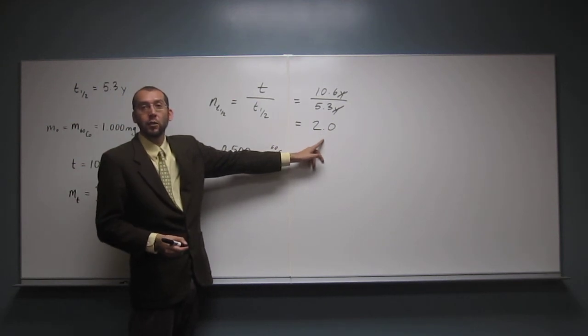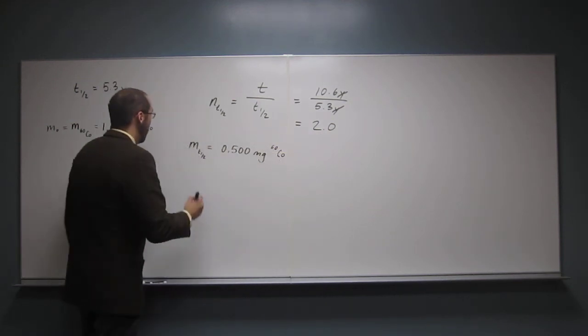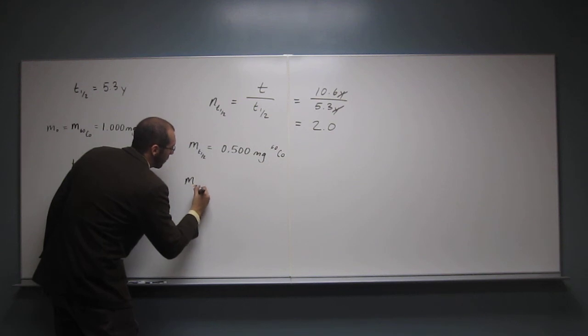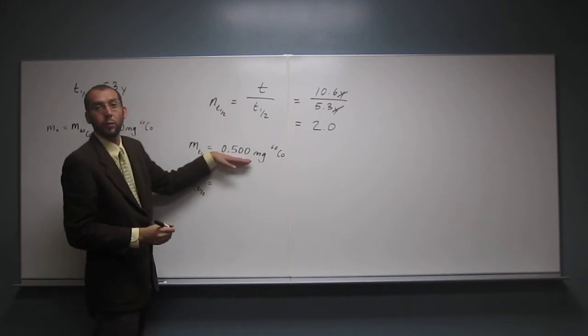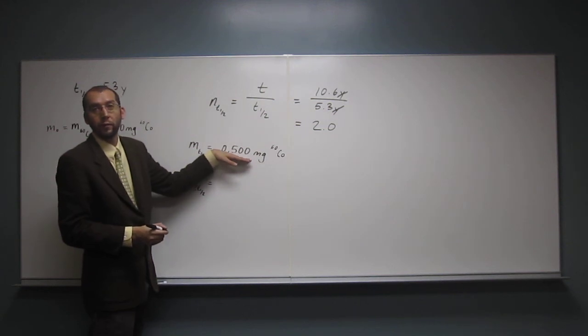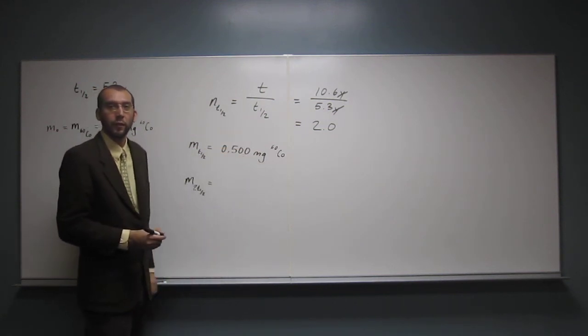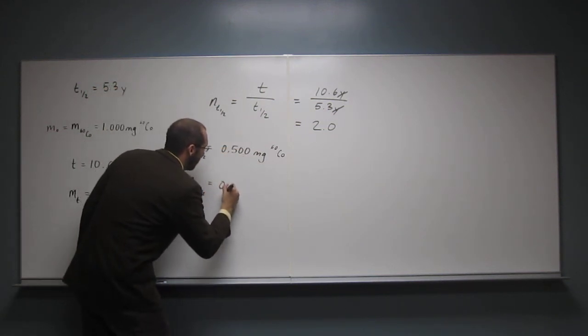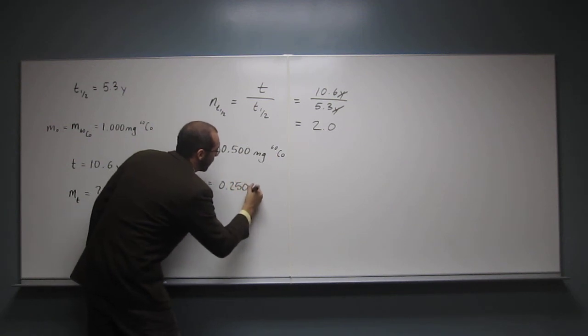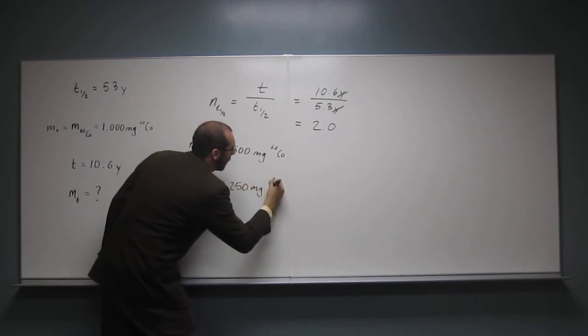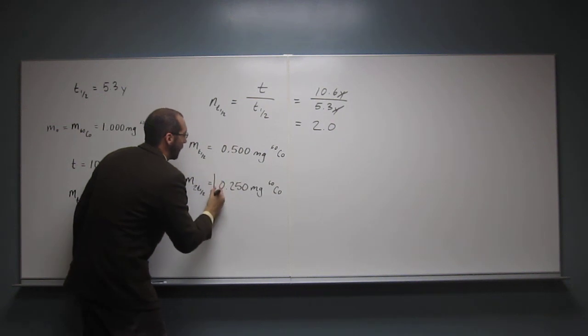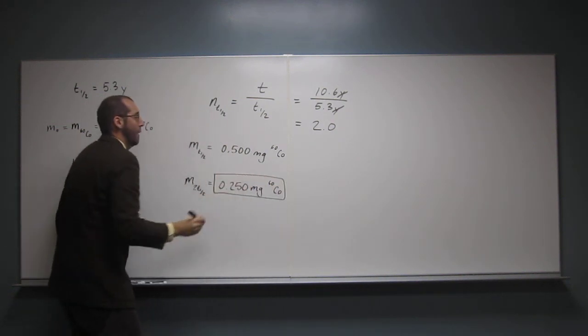but how many half-lives have we got? Two, right? So the mass after two half-lives is going to be, well, after one half-life it's 0.5, so what's it going to be after two half-lives? Yeah, 0.250 mg of cobalt-60. That's the answer.